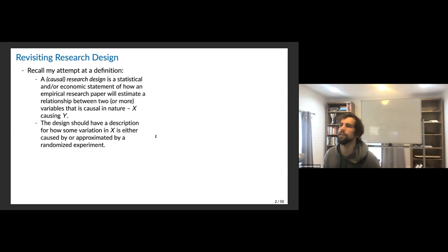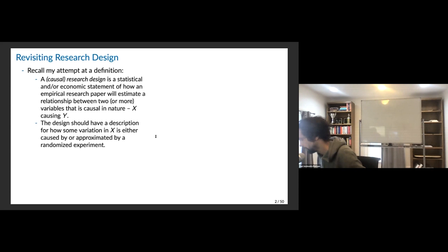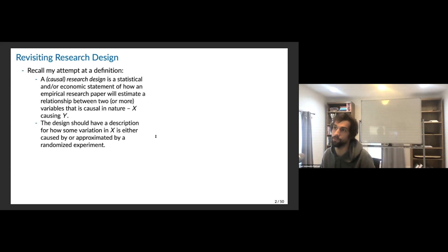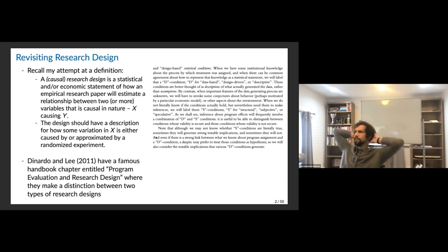Where I want to start is talking about how we initially talked about research design — something we covered in the first couple of weeks. I posed this idea of what a research design is. In experimental research, this idea of the credibility revolution: a research design is some statistical or economic statement of how we estimate a causal relationship between two variables, describing how variance in X is approximated or caused by a randomized experiment. DiNardo and Lee have a nice handbook chapter from the Handbook of Labor Economics called 'Program Evaluation and Research Design.'